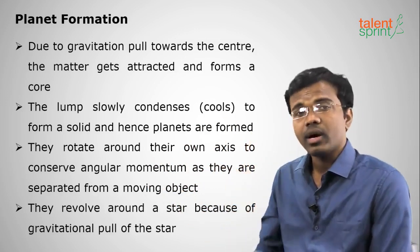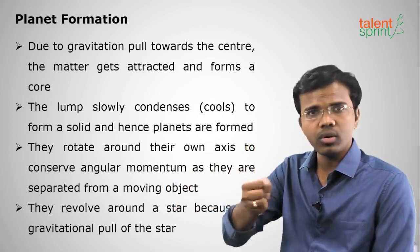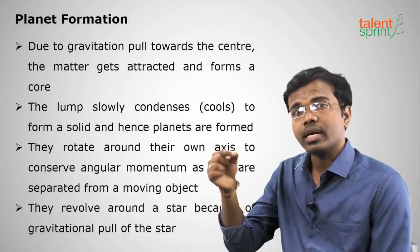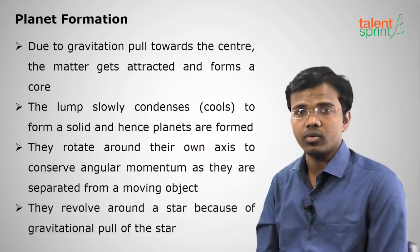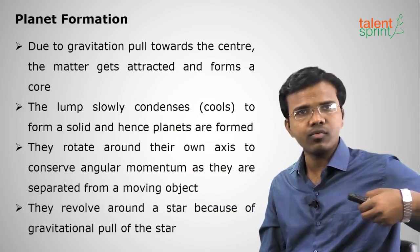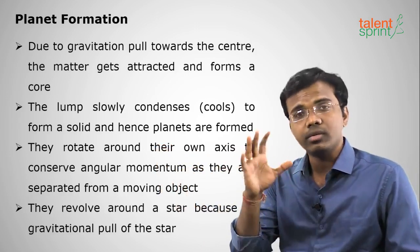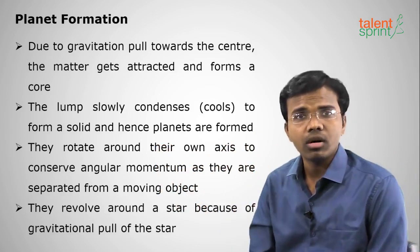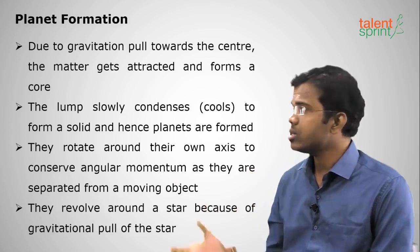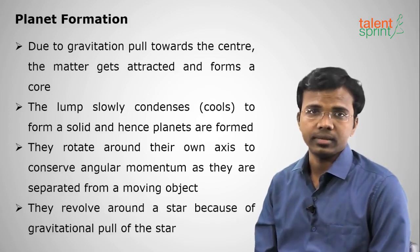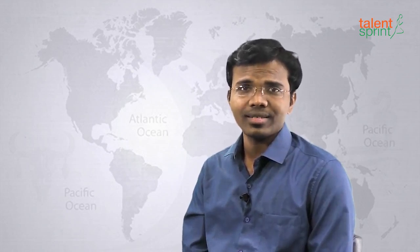Planets stay in orbit because two forces balance each other: the Sun's gravitational force pulls them inward, while centrifugal force pulls them outward during circular movement. These two forces balance, so Earth stays in its orbit and planets do not fall out of their orbits. In the next topic, we shall discuss the different planets in the solar system. Thank you so much for watching; we shall meet in the next session.